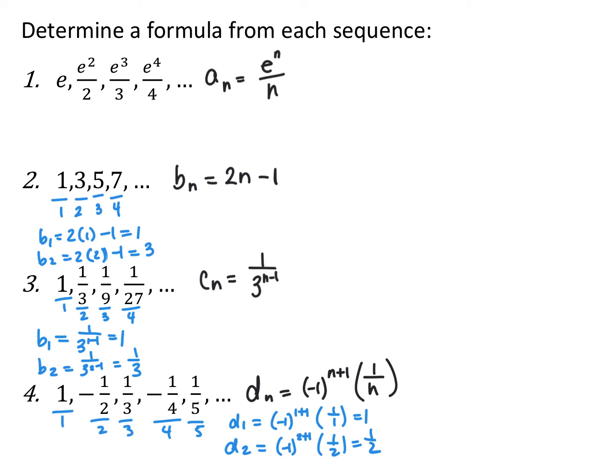For number 3, I noticed that it's always 1 over 3 to a power, but it's offset — it's not 1 over 3 to the n, it's actually down by 1. So that's why I made it 1 over 3 to the n minus 1. So that makes the first term, when I plug in 1, be 1 over 3 to the 0, which is 1. The second one gives you 1 over 3 to the 2 minus 1, which is 1 over 3, so on and so forth. And then the last one: the sign is alternating, so I knew I had to have negative 1 to a power, but I wanted it to be positive when I plug in an odd number. So I had to have my exponent be even — that's why I have n plus 1. You could also do n minus 1 to offset the negative, and then everything else was just 1 over n.